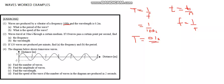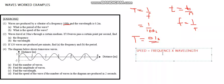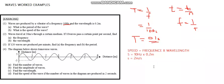Then B says: what is the speed of the wave? The formula that connects speed, frequency, and wavelength is: speed is equal to frequency times wavelength. So, speed equals 10 hertz times 0.2 meters, which gives us 2 meters per second as our speed. That's how we work out question 1.